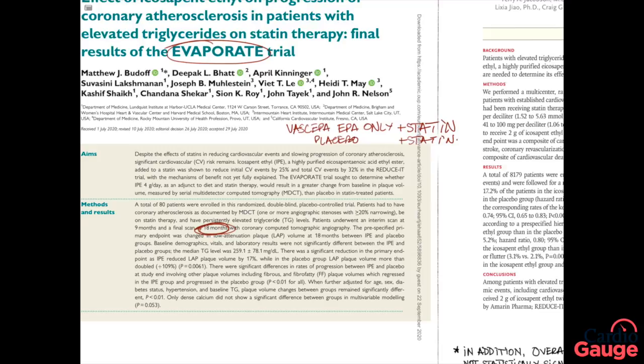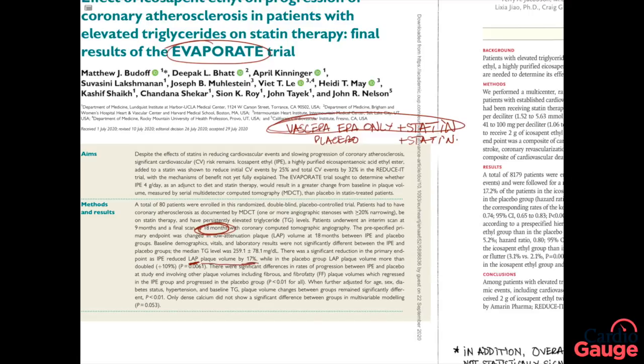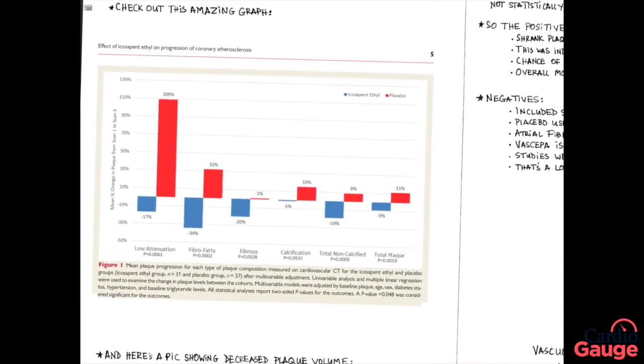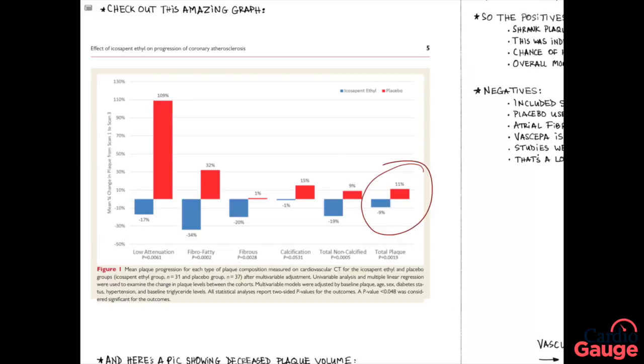It was a measure of the degree of plaque, the plaque volume. Remarkably, Vascepa plus a statin decreased the plaque volume by a lot. It turned out that soft plaque, which is low attenuation plaque, decreased by 17 percent. And then a more important number from my point of view, which you can see on this amazing graph here, the total plaque volume in the Vascepa group decreased by 9 percent. So it shrank plaque a lot.